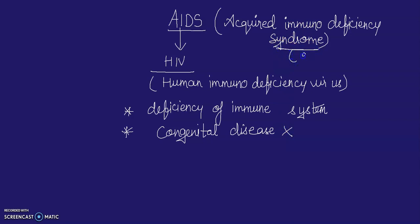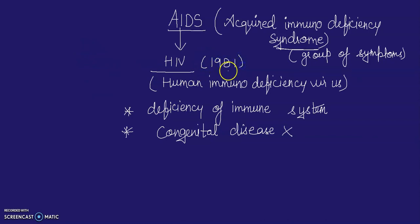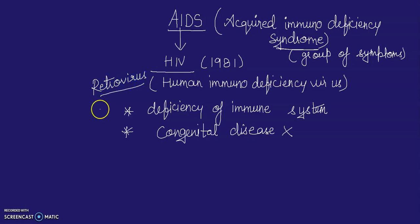The word 'syndrome' refers to a group of symptoms occurring together. AIDS was first reported in 1981. It is caused by HIV, which belongs to a group of viruses called retroviruses. Retroviruses have an envelope enclosing an RNA genome.